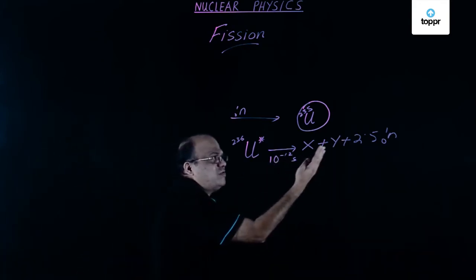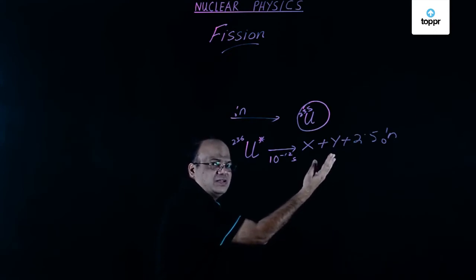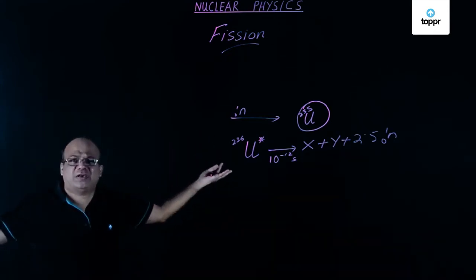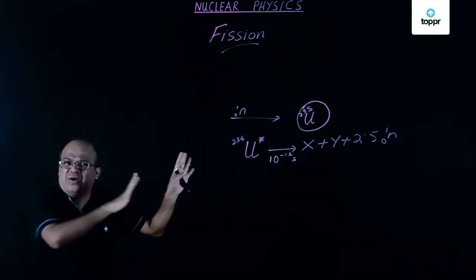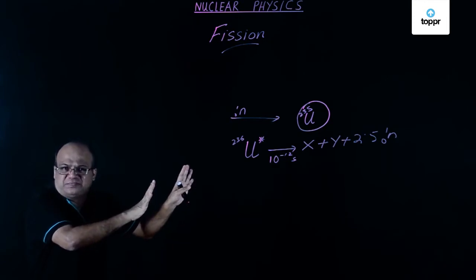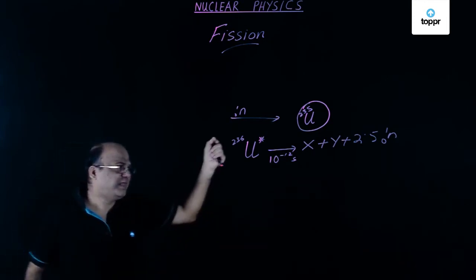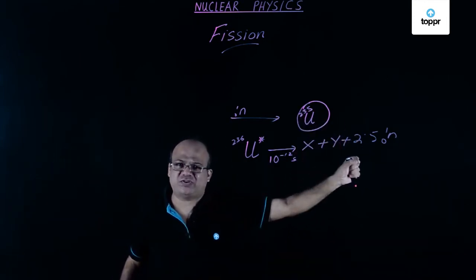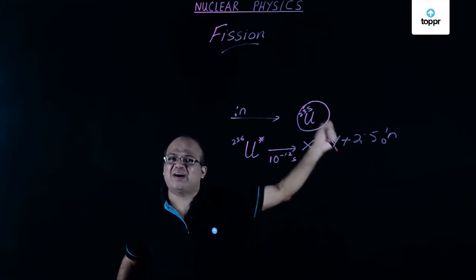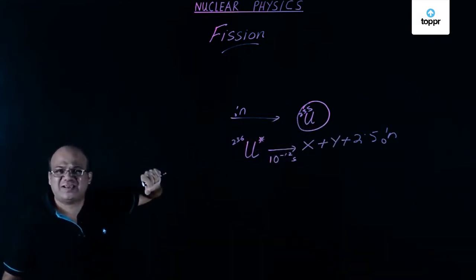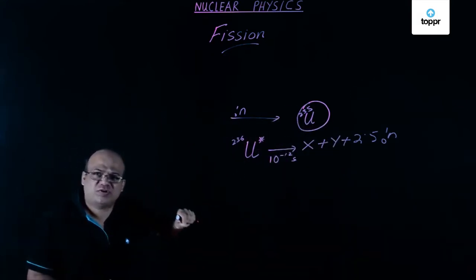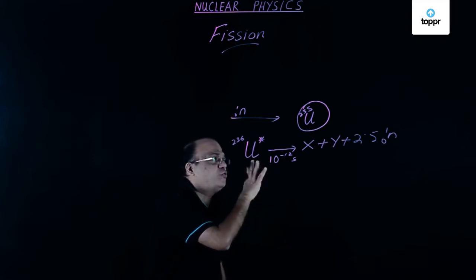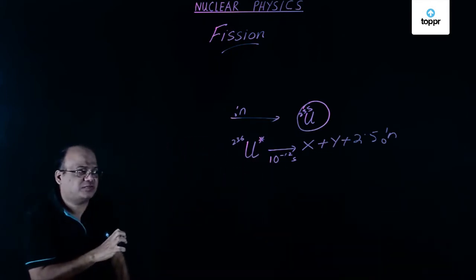X and Y can be 90 different kinds of nuclei — X and Y are not fixed. Some reactions will get two neutrons, other reactions will get three neutrons, so the average is 2.5 neutrons.